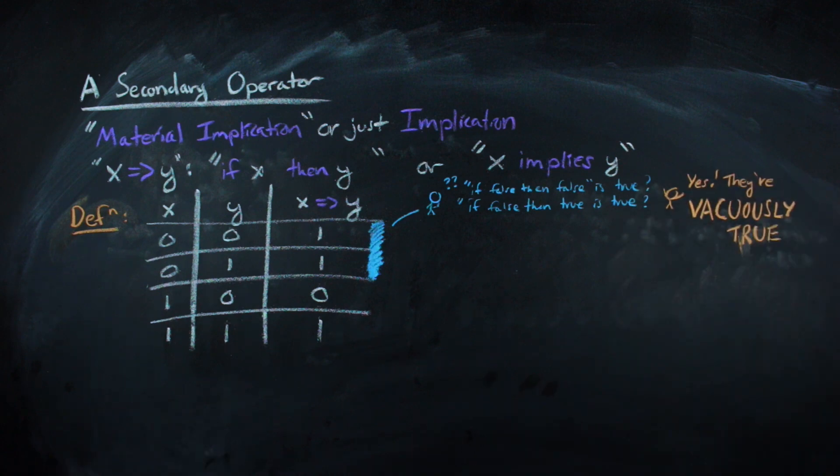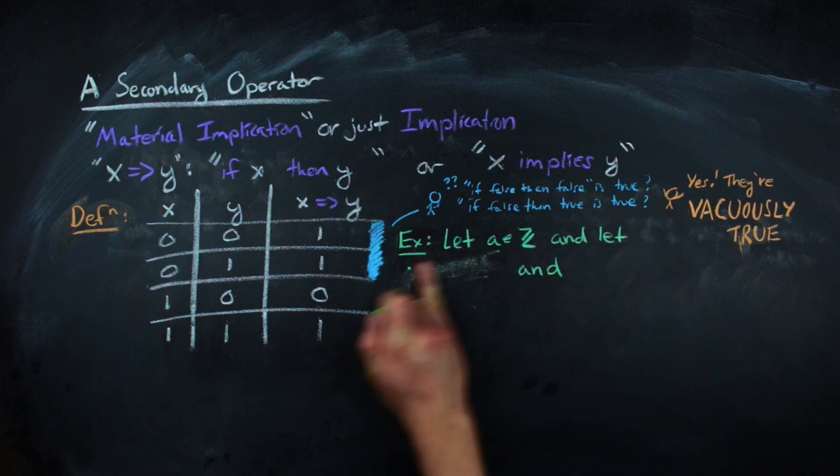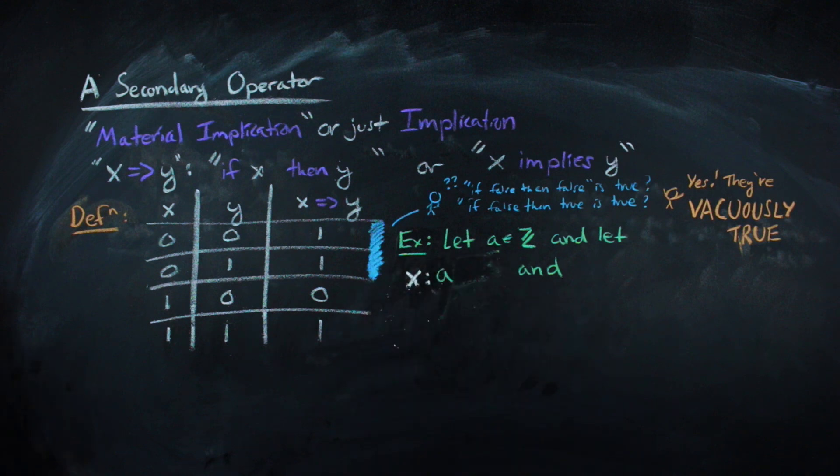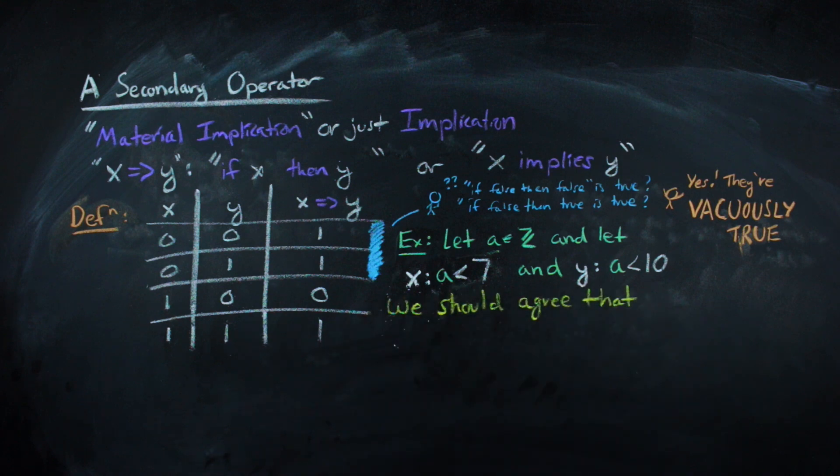One of the easier ways to think about this is with inequalities. Let a be some integer, and let x be the inequality a is less than 7, and let y be the inequality a is less than 10. Then the implication x implies y is something we should agree on being true.